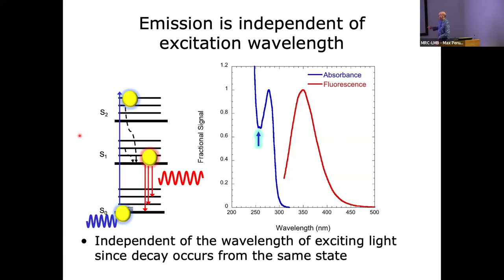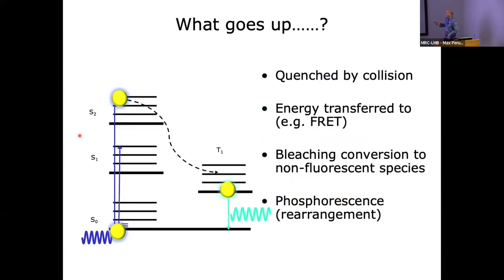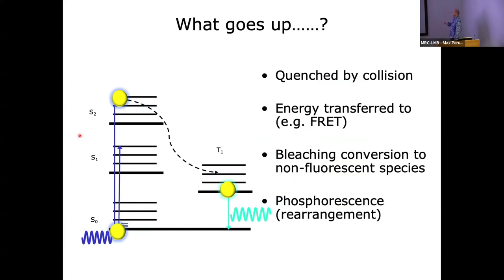Sometimes what goes up doesn't necessarily always come down. You can have other ways for the energy to be transferred. One way is FRET, which we'll come back to later. Another way is when it gets bleached to non-fluorescent species, or you can get intersystem crossing which will lead to phosphorescence, and that tends to be on much longer time scales - that's why things glow for a long time, like those kind of glow-in-the-dark stars.